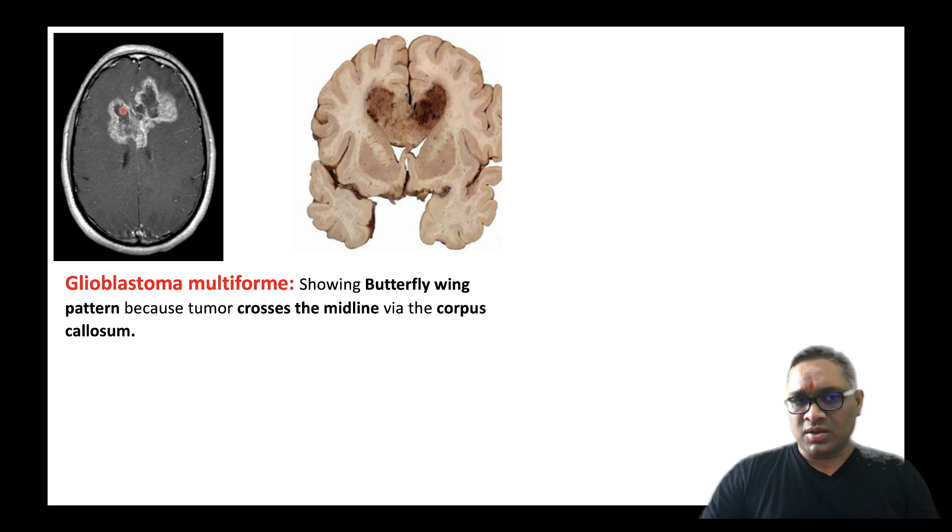On CT scan, you can see this butterfly glioma is visible. On gross examination, you can notice these are hemorrhagic necrotic masses looking like a butterfly. They are crossing the midline via corpus callosum and that is why it is also called butterfly glioma.